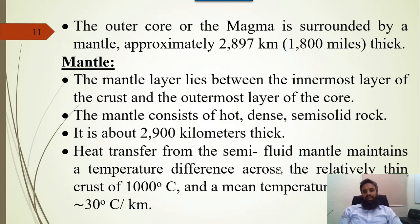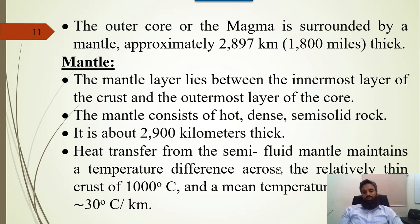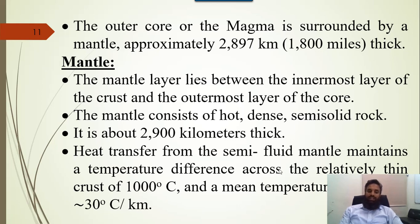The outer core of the magma is surrounded by the mantle, approximately 2897 km — about 1800 miles thick. The mantle layer lies between the innermost layer of the crust and the outer layer of the core. The mantle consists of hot, dense, semi-solid rock and is about 2900 km thick. Heat transfer from the semi-fluid mantle maintains a temperature difference across the relatively thin crust of 1000 degrees centigrade, with a mean temperature gradient of about 30 degrees centigrade per kilometer.